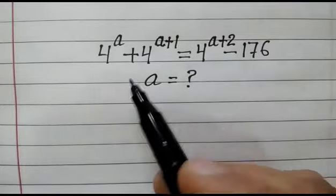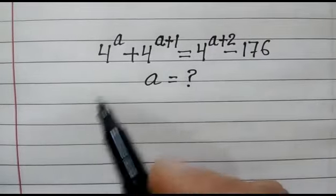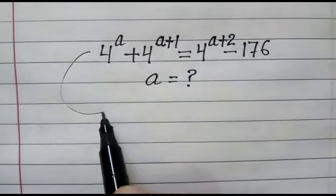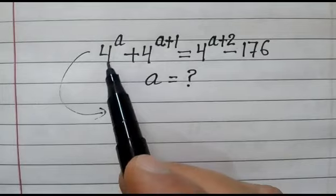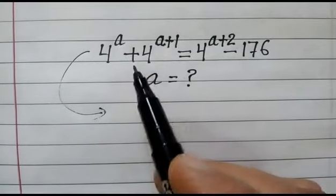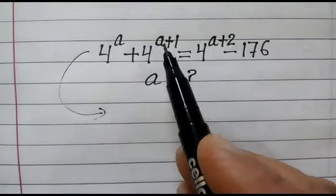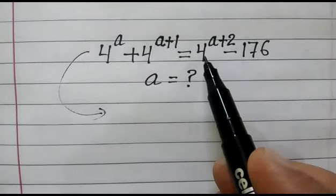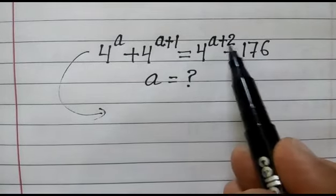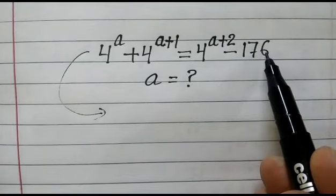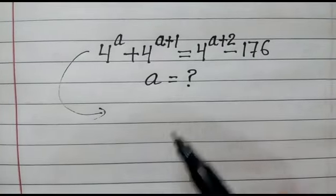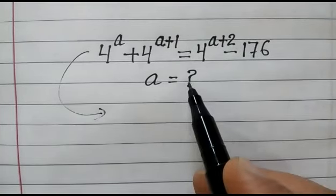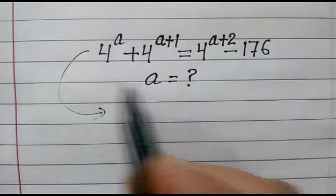Hi friends, we have an exponential equation: 4 to the power a plus 4 to the power (a+1) is equal to 4 to the power (a+2) minus 176. We have to find out the value of a.